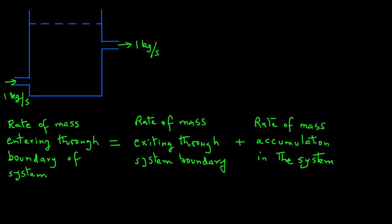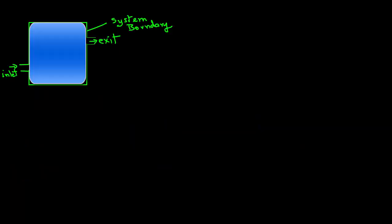the rate of mass entering through the boundary of the system will be same as the rate of mass exiting through that system boundary. As we see in this tank, if the level remains the same, we have both the rate going in one kilogram per second is the same as the rate going out one kilogram per second.